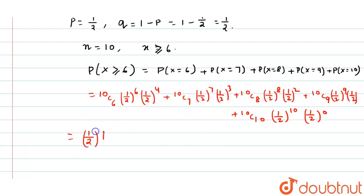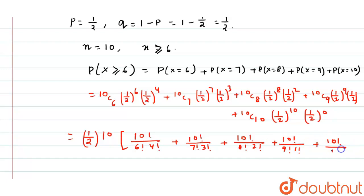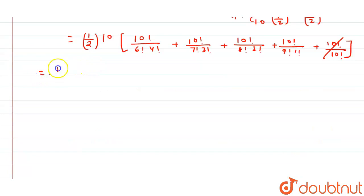So we get half to the power 10 times the sum. Now 10C6 equals 10 factorial by 6 factorial times 4 factorial; 10C7 equals 10 factorial by 7 factorial times 3 factorial; 10C8 equals 10 factorial by 8 factorial times 2 factorial; 10C9 equals 10 factorial by 9 factorial times 1 factorial; and 10C10 equals 10 factorial by 10 factorial, which cancels to 1. So we have 1 over 2 to the power 10, that means 1 over 1024.